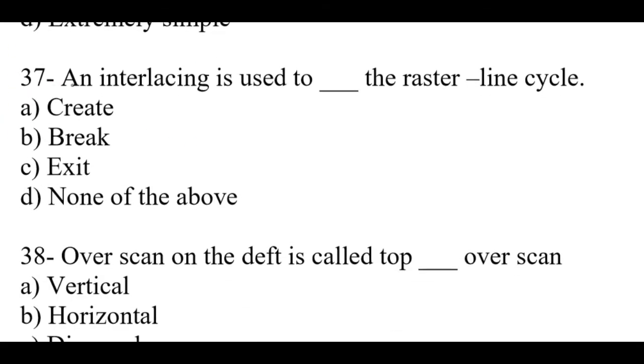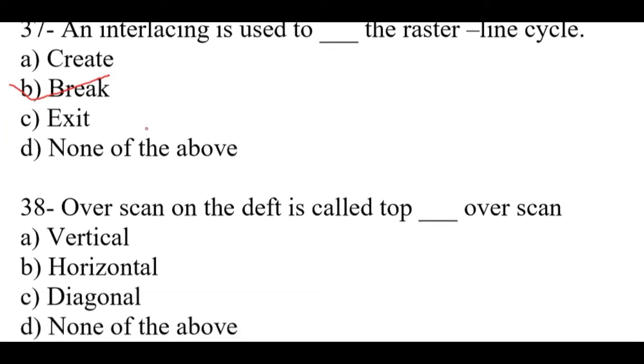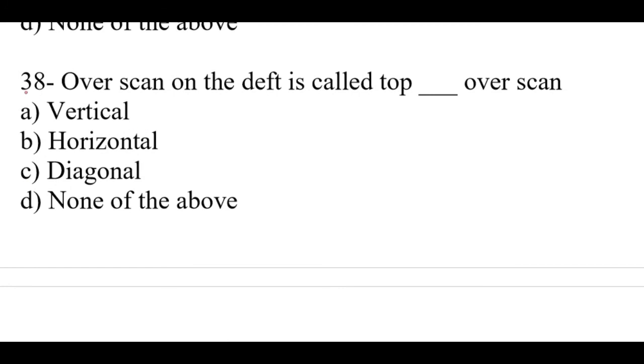Question number 37: In interlacing is used to dash the raster line cycle. Right option is B, break. Question number 38: Over scan on the depth is called top dash over scan. Right option is A, vertical.